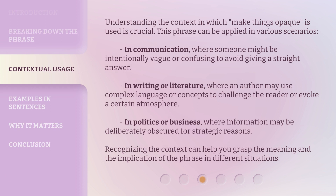Understanding the context in which 'make things opaque' is used is crucial. This phrase can be applied in various scenarios: in communication, where someone might be intentionally vague or confusing to avoid giving a straight answer; in writing or literature, where an author may use complex language or concepts to challenge the reader or evoke a certain atmosphere; and in politics or business, where information may be deliberately obscured for strategic reasons. Recognizing the context can help you grasp the meaning and implication of the phrase in different situations.